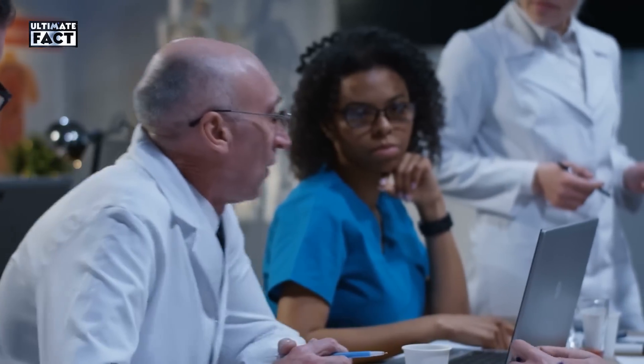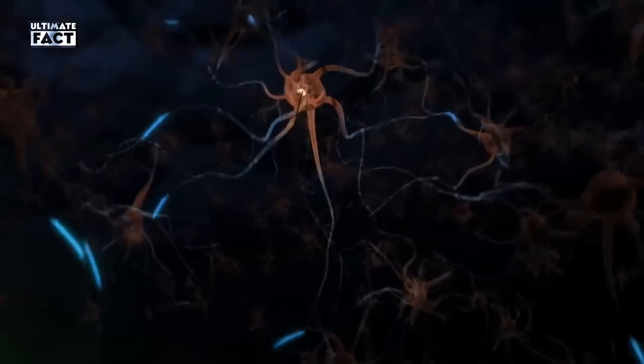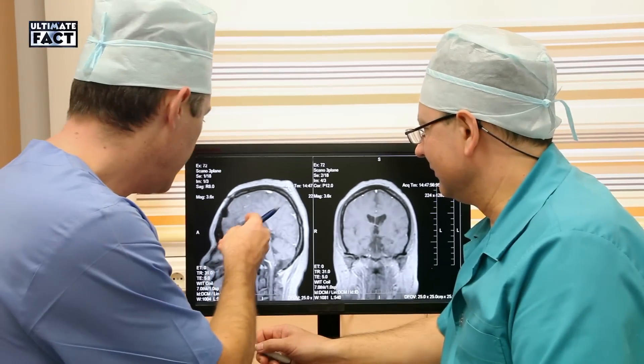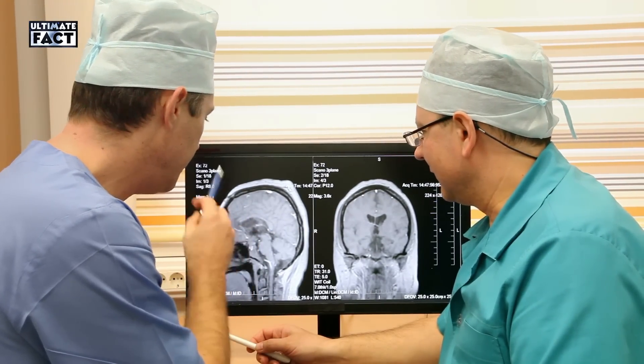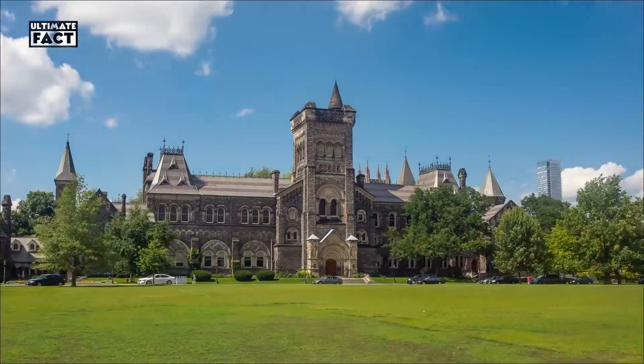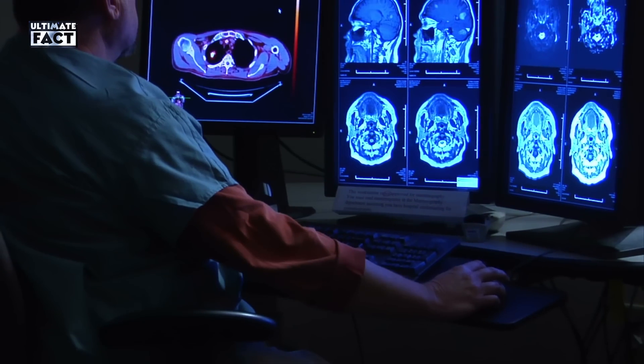Our brain is such a complex organ that experts used to think we only used about 10% of it, but neurologists now believe it's possible we use all of it. Danny Simmons, who studies neuroscience with a focus on teenage brain development at the University of Pittsburgh in Pennsylvania, says there are three major influences that affect the way our brain functions.